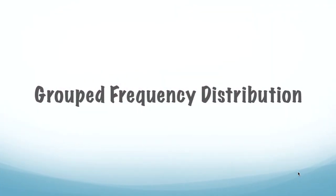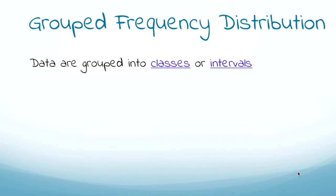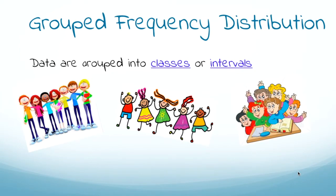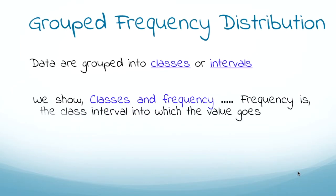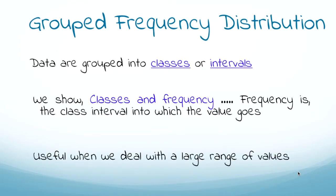Now let's talk about grouped frequency distribution, where we have grouped data sets. Here the data are grouped into classes, also called intervals or class intervals. Just like students of different age groups are sent to different classes, data is placed into different classes based on certain criteria. A grouped frequency distribution shows classes and their frequencies — specifically, into which class interval each data value falls.